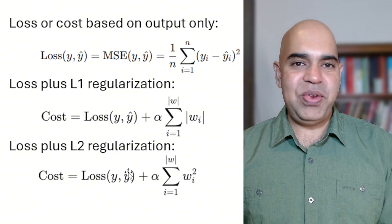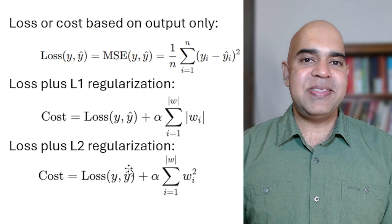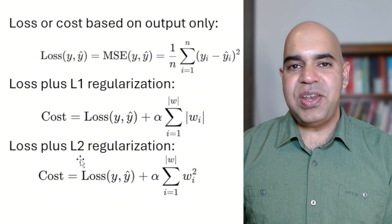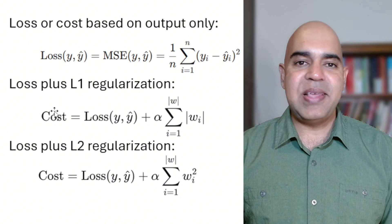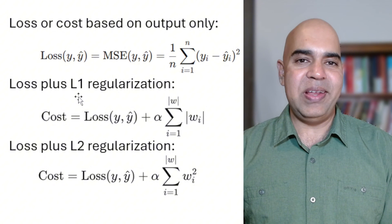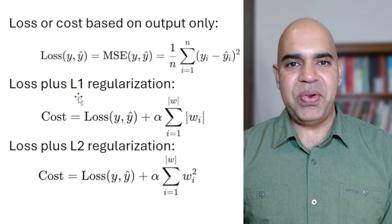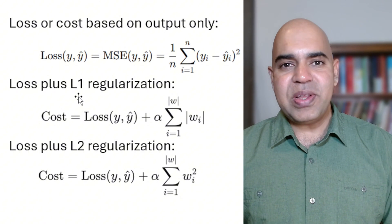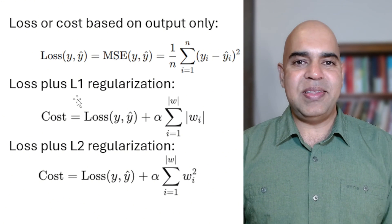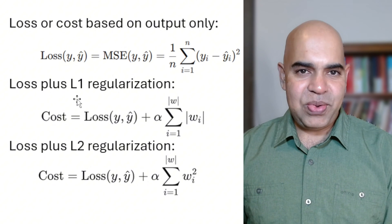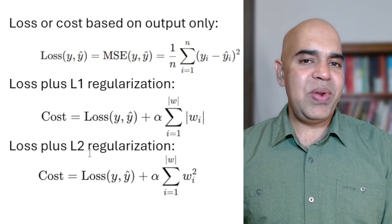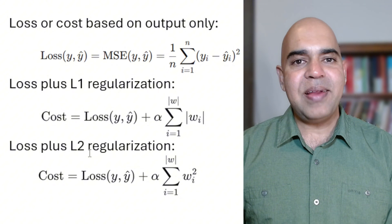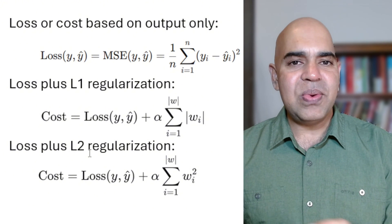A few months ago, we discussed that L1 and L2 regularization help us deal with the overfitting issues in neural networks. L1 regularization pushes some of the features to have very small weights, close to zero, allowing some other important features to associate with large weights in the neural network. L2 regularization tries to make the weights less than one, but is a bit reluctant to make the weights too close to zero.